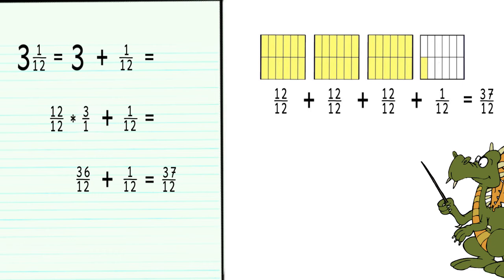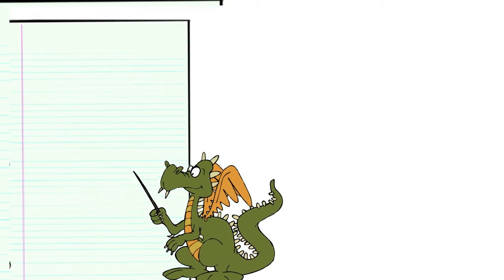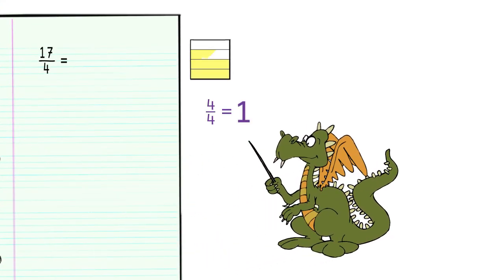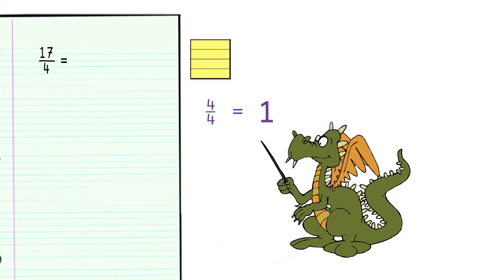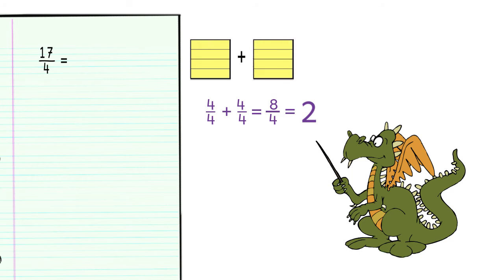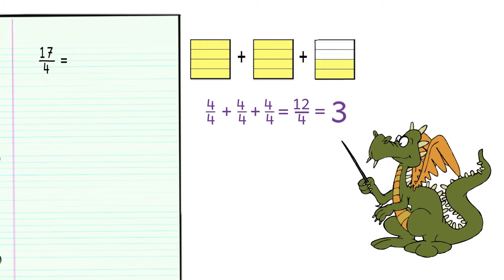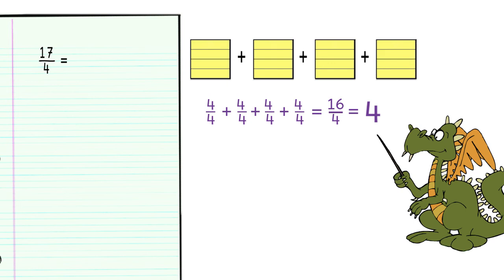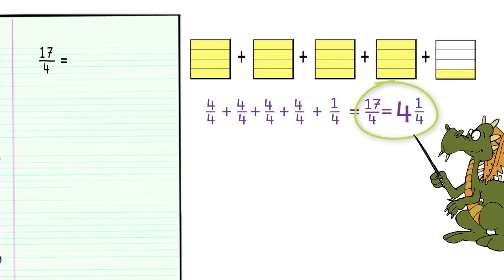Now let's look at the reverse situation. What if we had a fraction and we wanted to turn it into a mixed number? If we have 17 fourths, we know that 4 fourths is a whole. 8 fourths equals 2 wholes, 12 fourths equals 3 wholes, and 16 fourths is the same as 4 wholes. That leaves just 1 fourth left over. So 17 fourths is the same as 4 and 1 fourth.